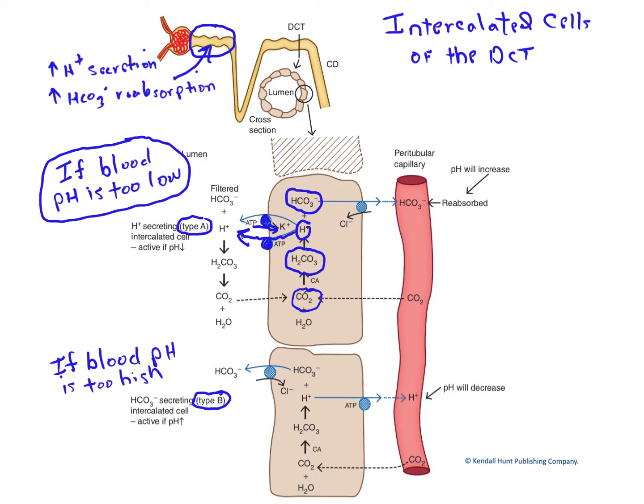We have just secreted a proton, and we've done it indirectly. How about the bicarbonate that was formed via dissociation of carbonic acid? Well, that is then transported into the extracellular fluids by a basolateral bicarbonate-chloride countertransporter. We've now reabsorbed bicarbonate.